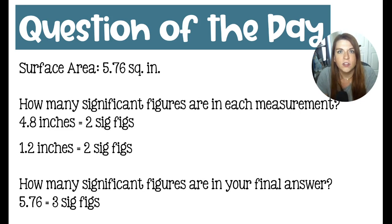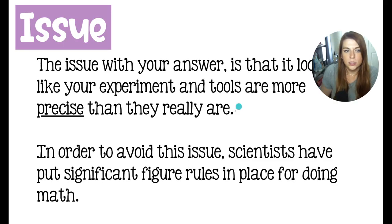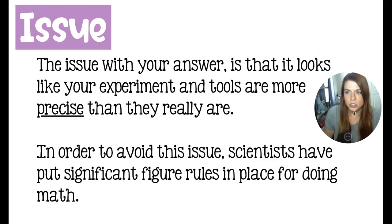There were two significant figures in each dimension of our length and width, our measurements, the 4.8 and the 1.2, each have two significant figures. But when we multiply them, we wind up with an answer that gives us three significant figures. And this is going to cause us some problems because our tools only measured two sig figs, and then we just did some math and we gained an extra sig fig.